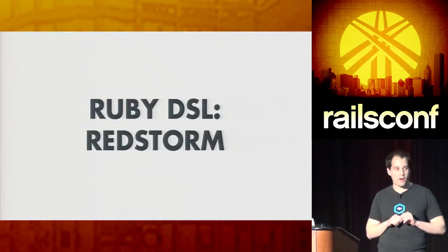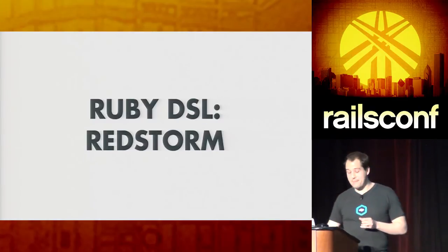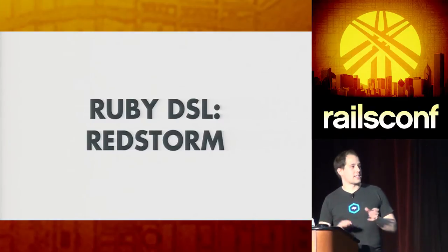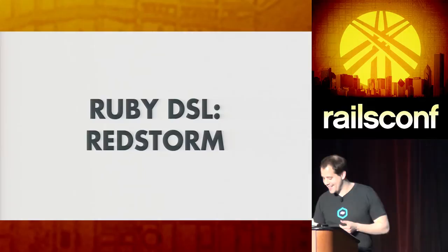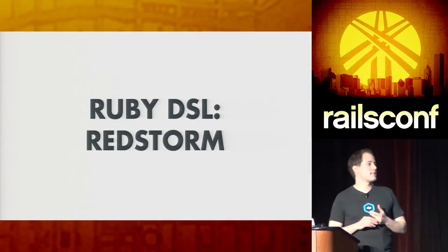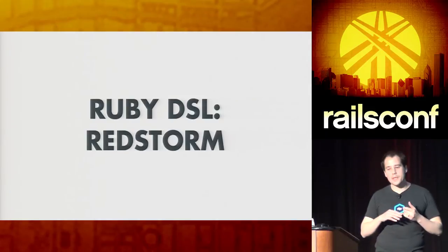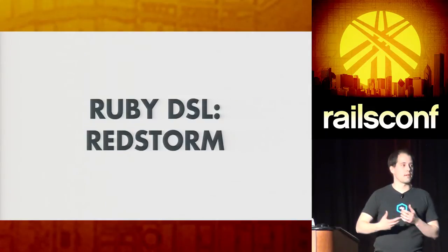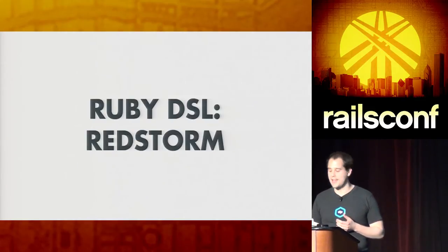There is a GitHub project called RedStorm — you can just Google 'GitHub RedStorm'. It does JRuby binding to Storm. It also goes a bit further — it provides Ruby DSLs for everything related to Storm. So you can define all your data transformations in terms of Ruby DSLs.